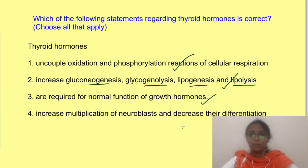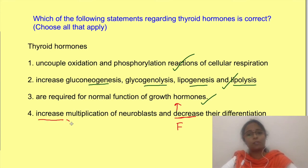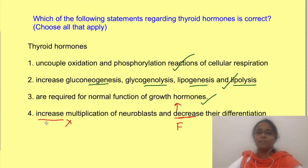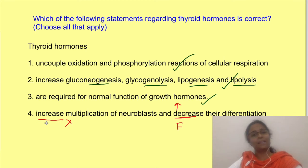The last statement is false. Thyroid hormones increase the differentiation of neurons and are important for making the switch from multiplication to differentiation of neurons, not as mentioned in the statement. Thanks for watching the video — if you liked it, do not forget to subscribe to the channel Physiology Open. Thank you.